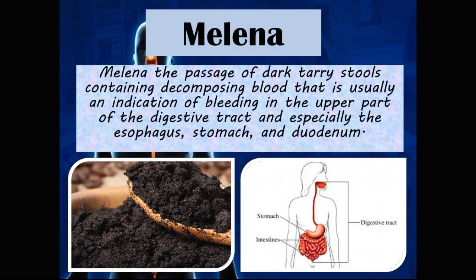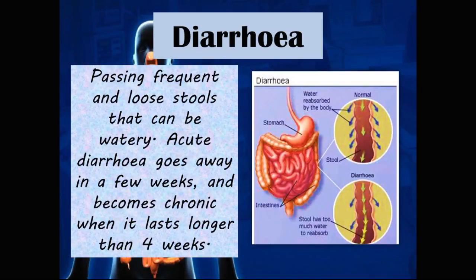Melena is the passage of dark tarry stools containing decomposing blood, and it is usually an indication of bleeding in the upper part of the digestive tract — especially the esophagus, stomach, and duodenum. For example, an esophageal cancer or an ulcer at the lesser curvature of the stomach can cause bleeding. By the time that blood passes through the entire gastrointestinal tract, it is digested and passed out in the stools as very dark tarry material.